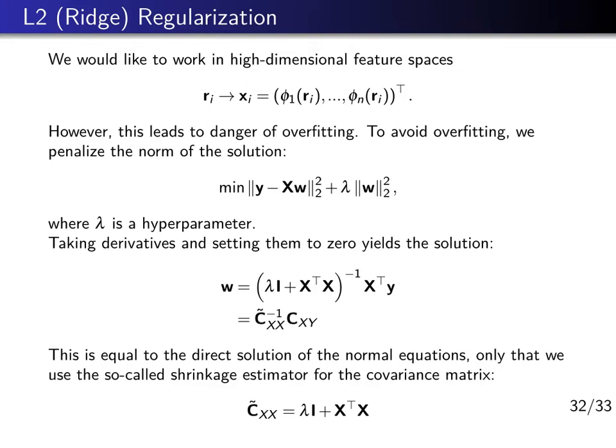You see in the solution the regularized covariance matrix Cxx is very similar to the unregularized one, it just contains the small additive diagonal contribution, and this estimator is actually called a shrinkage estimator in statistics.